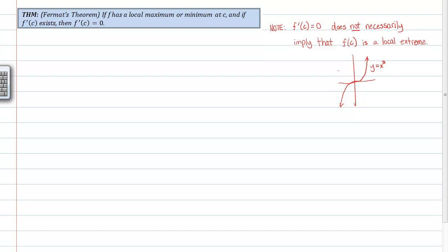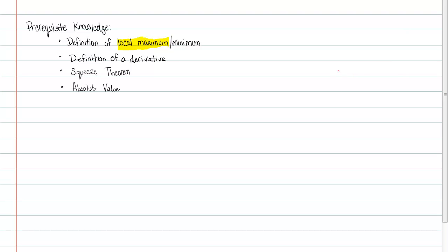Now, speaking of local maxes and mins, we should talk about what is required knowledge for this proof. Here are the items you have to know: the definition of a local max and a local min. Specifically, we're going to tackle the maximum, so I'm just going to deal with one half of this proof.